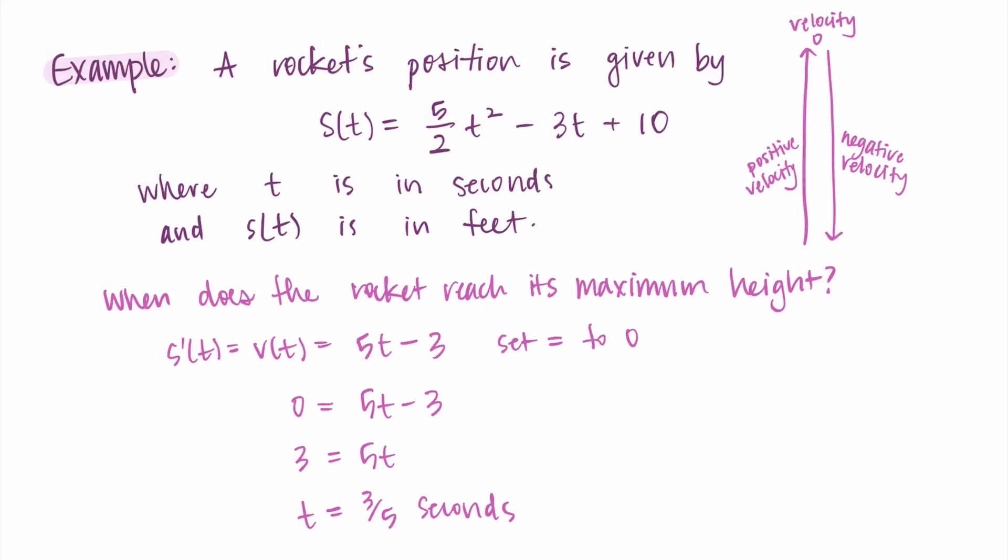If you really wanted to be super sure that this was the maximum, you could use the first derivative test where you plot this as a critical number and you choose a test point in each interval. But because I sort of understand the context of the problem here, it's not like this is the minimum height of the rocket, since the rocket's starting on the ground and then going up in the air. So I know that this is the maximum just because of the situation.